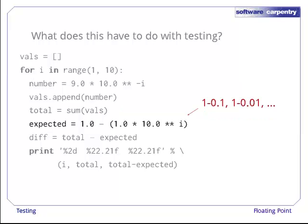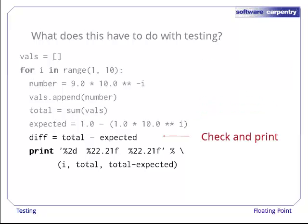Let's calculate the same values a different way by subtracting 0.1 from 1, then subtracting 0.01 from 1, and so on. This should create exactly the same sequence of numbers. Let's check by finding the difference and printing it out.